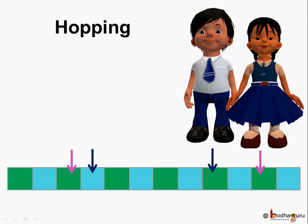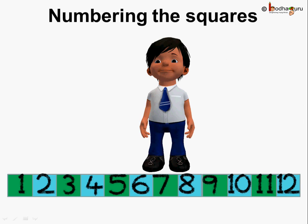So it was a lot of fun hopping from here to there and continuing again. But they had a problem counting the squares every time they hopped. So Aman came up with an idea. What did he do?